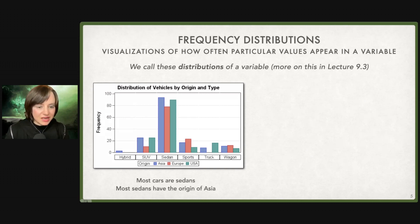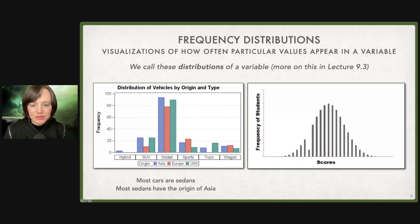This is a fascinating distribution of vehicles by origin and type. Most cars are sedans. And we can map something like the scores that students get on a test. Distributions are going to be a backbone of a lot of the work that we do. So the more comfortable we can get looking at distributions, how many subjects in our study received what types of scores, had what type of origin, and so on.